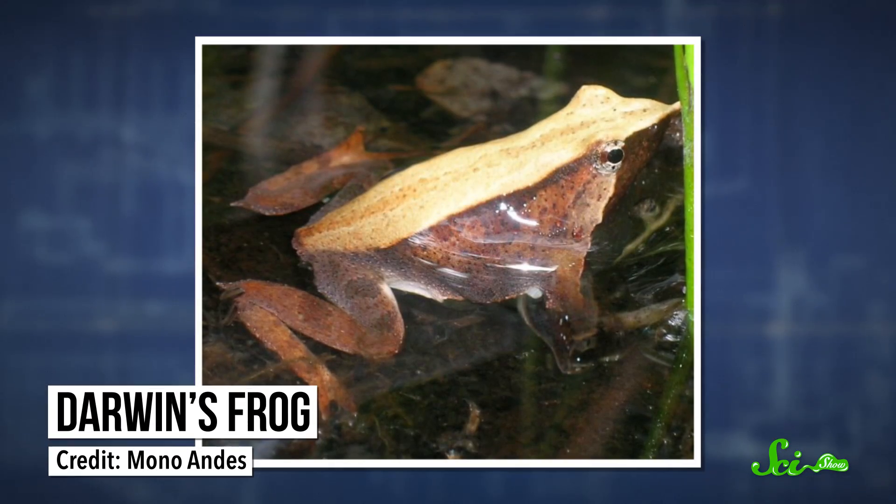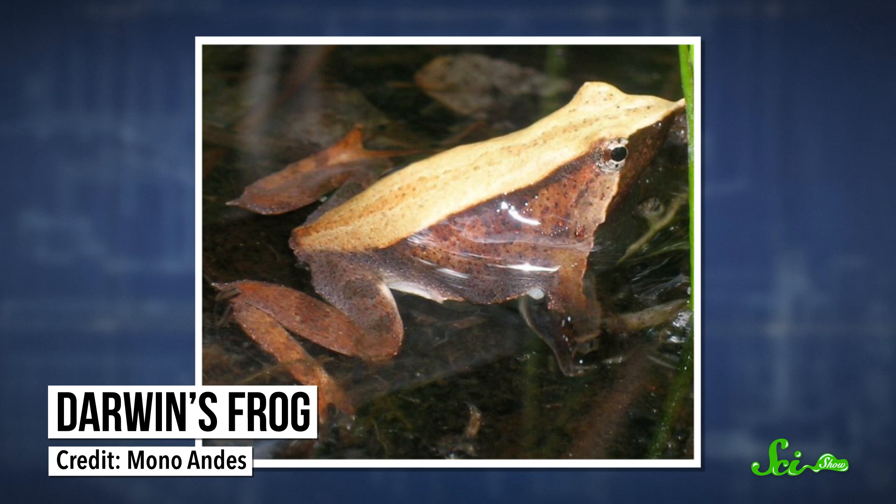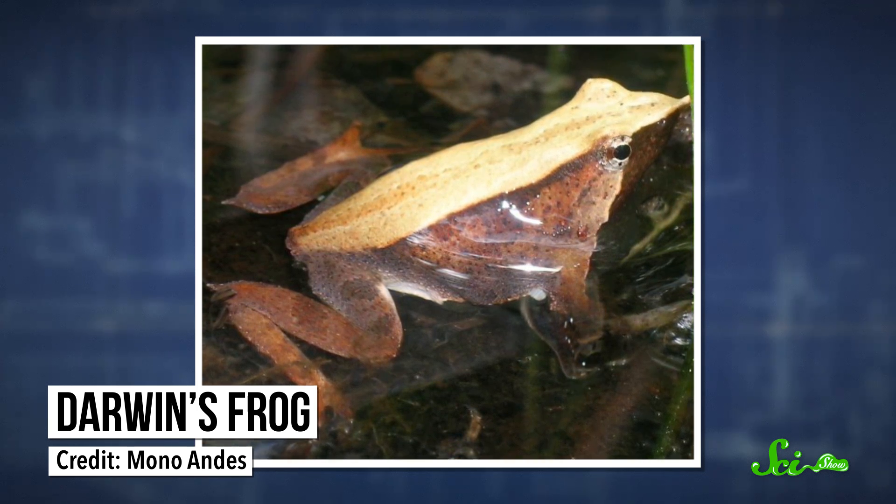Now, piggybacking your offspring is one thing. But imagine carrying a bunch of squirmy babies around in your mouth. That's basically what South American Darwin's frog fathers do. The female deposits her eggs on the ground in moist leaf litter, where the male fertilizes them. Then she hops off, never to be seen again, and the male keeps watch over the eggs for the next three weeks.